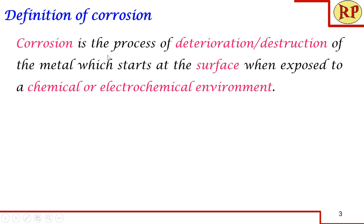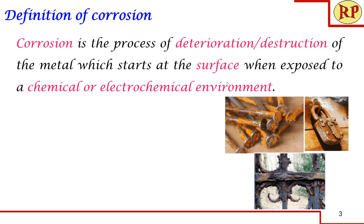First let us understand what is corrosion. Corrosion is the process of deterioration, destruction, or degradation of a metal which starts at the surface when exposed to a chemical or electrochemical environment. That is, the metal first undergoes corrosion at the surface because the inner metal is not exposed to any environment. When I pose a question — give me an example of corrosion — you will immediately answer that it is rust, because we are used to seeing rust formation in our daily life.